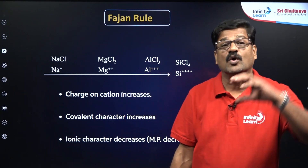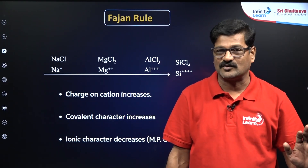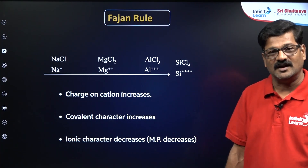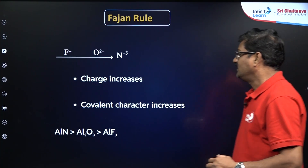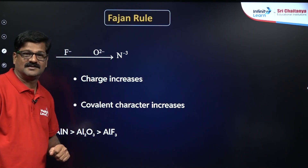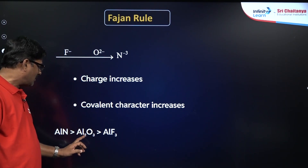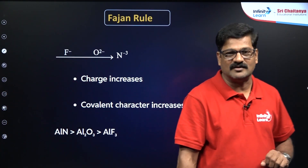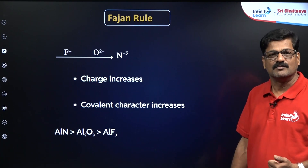More ionic character means higher melting point; less ionic means lower melting point. More ionic means more soluble in water; less ionic means less soluble in water. Similarly, for anions F⁻, O²⁻, N³⁻ — as charge increases, covalent character increases. That is why the order of covalent character is: aluminium nitride > aluminium oxide > aluminium fluoride. Aluminium nitride is more covalent; aluminium fluoride is more ionic.